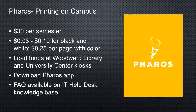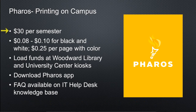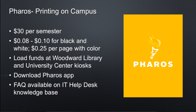As an effort to increase sustainability on campus, one initiative resulted in the implementation of Pharos to help students monitor and reduce their printing. You are allotted $30 each semester uploaded to your student ID. Printing costs between $0.08 and $0.10 for black and white, and $0.25 per page for color. If you need to add additional funds, there are kiosks in the University Center and the Woodward Library. There is a Pharos app available in the App Store. For more information or assistance, please visit the APSU Information Technology knowledge base.